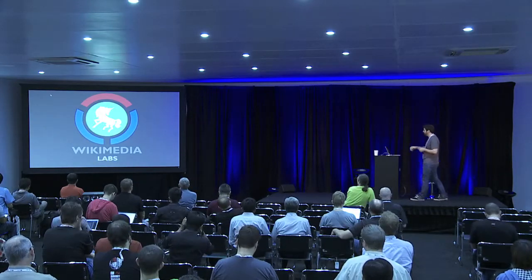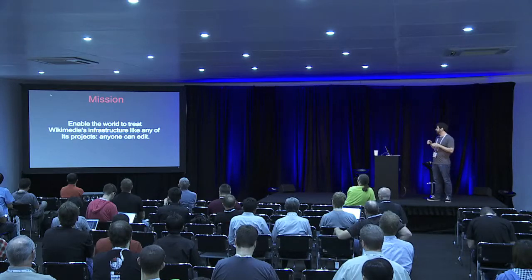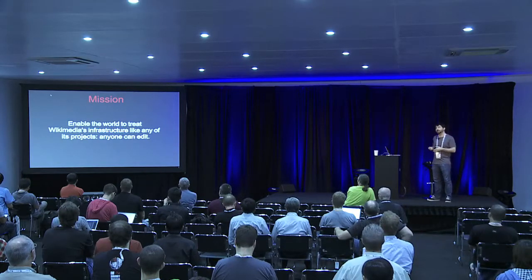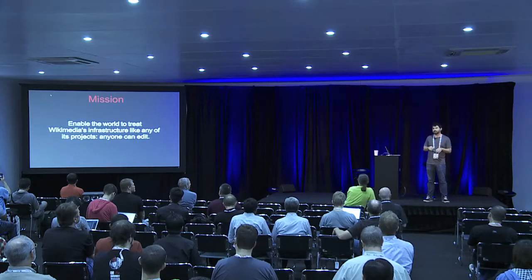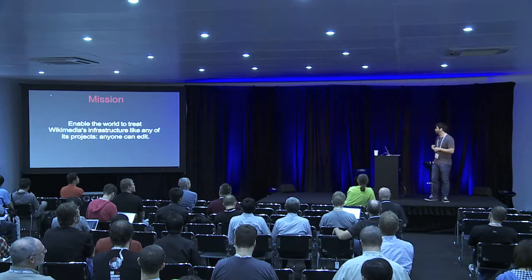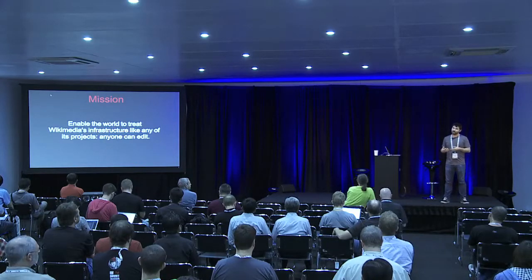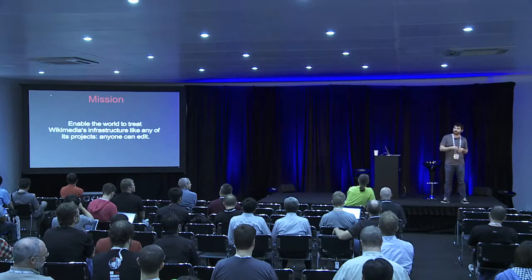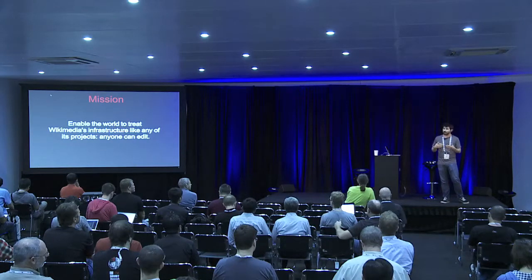Some background on Wikimedia Labs. Its mission is to enable the world to treat Wikimedia's infrastructure like any of its projects — in that anyone can edit it. So like Wikipedia, you go to a page, you click edit, you type some text in, you hit save. Wikimedia Labs is meant to be a cloud environment where anyone in the world can come, join a project, start doing some infrastructure work, push changes in Puppet, and deploy them to a top-five website. Basically giving anyone in the world root-level access to our actual technical infrastructure.